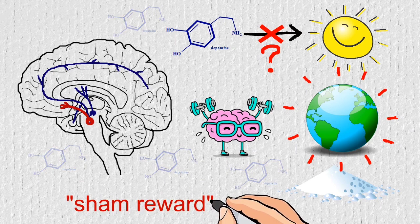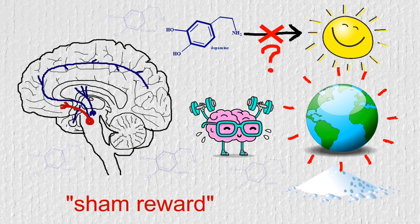So in their paper, they call it a sham reward. That sounds weird, isn't it? How can you mistake a feeling?